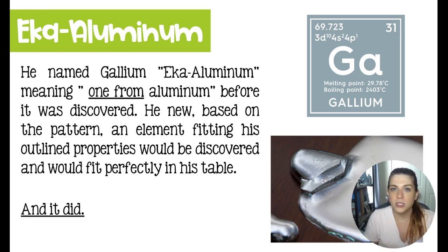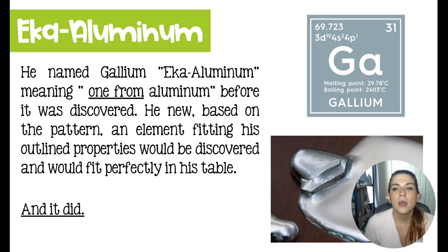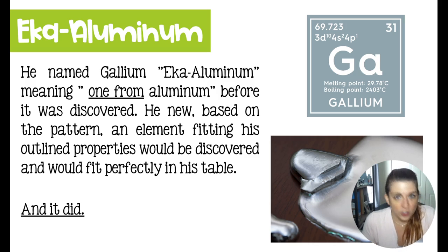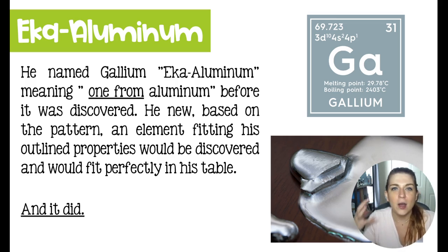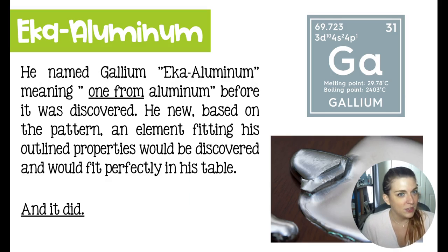He knew it was going to be a shiny silver metal with a very low melting point, and that its mass and melting and boiling points would fit the pattern of his table. Insanely enough, when they found gallium, it fit perfectly in the space that Mendeleev had left. Unfortunately, this discovery was made after Mendeleev had died, so he never got to see how the element he predicted fit into the table. To pay homage to him, we now have element 101, named Mendelevium in his honor.